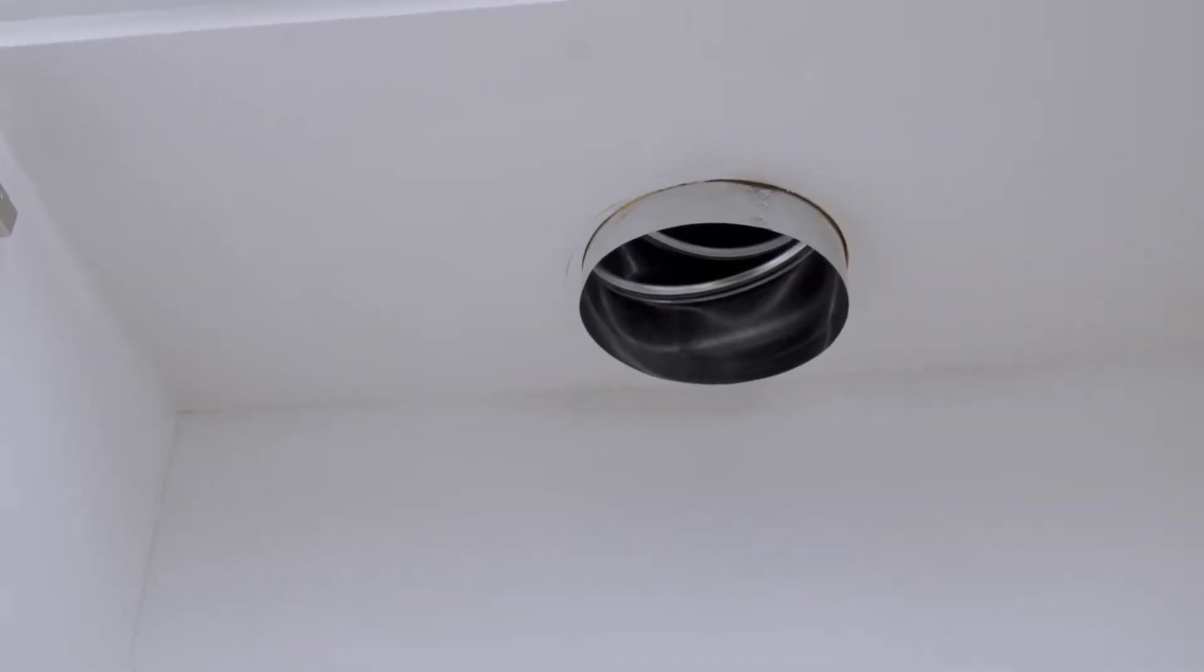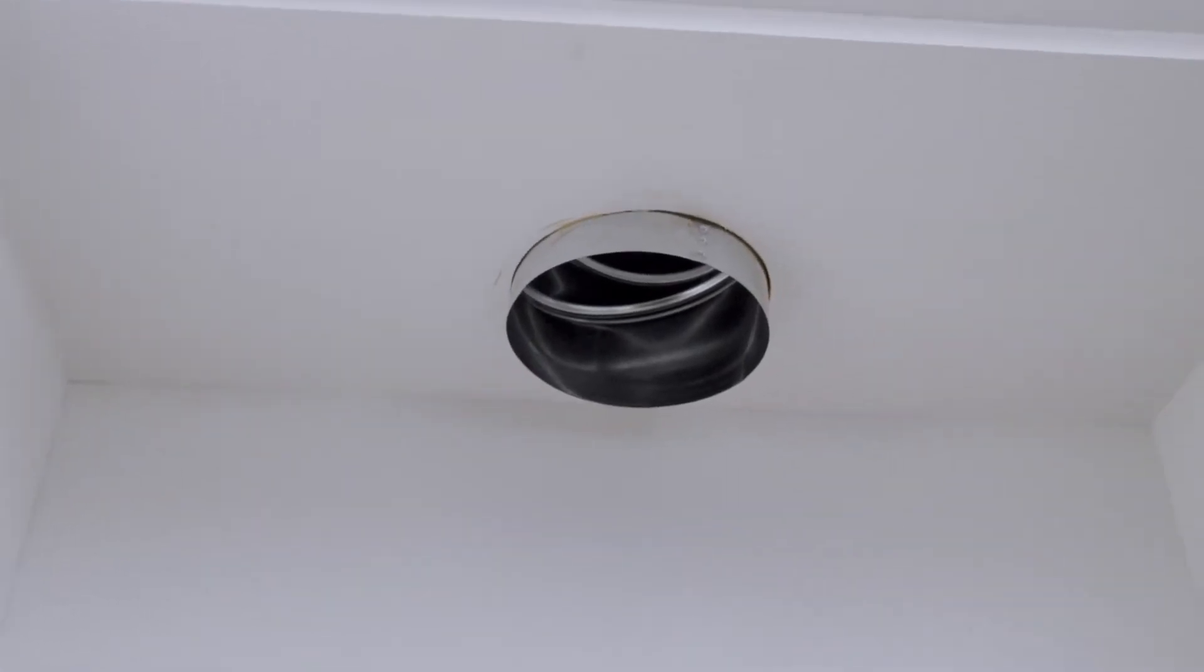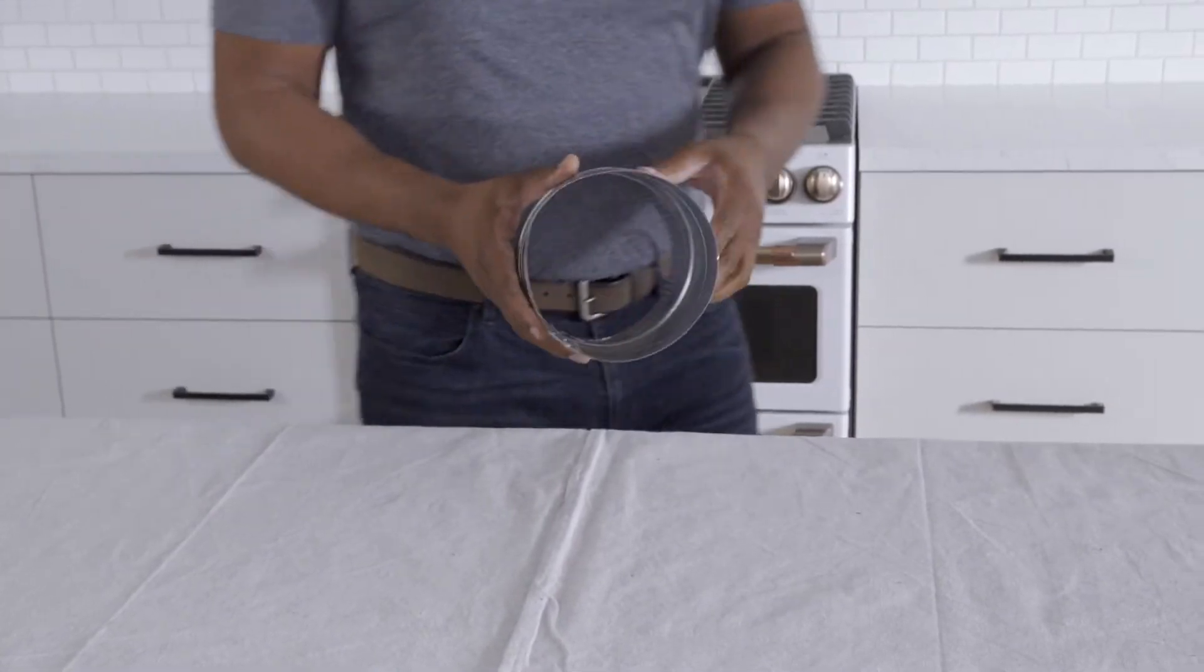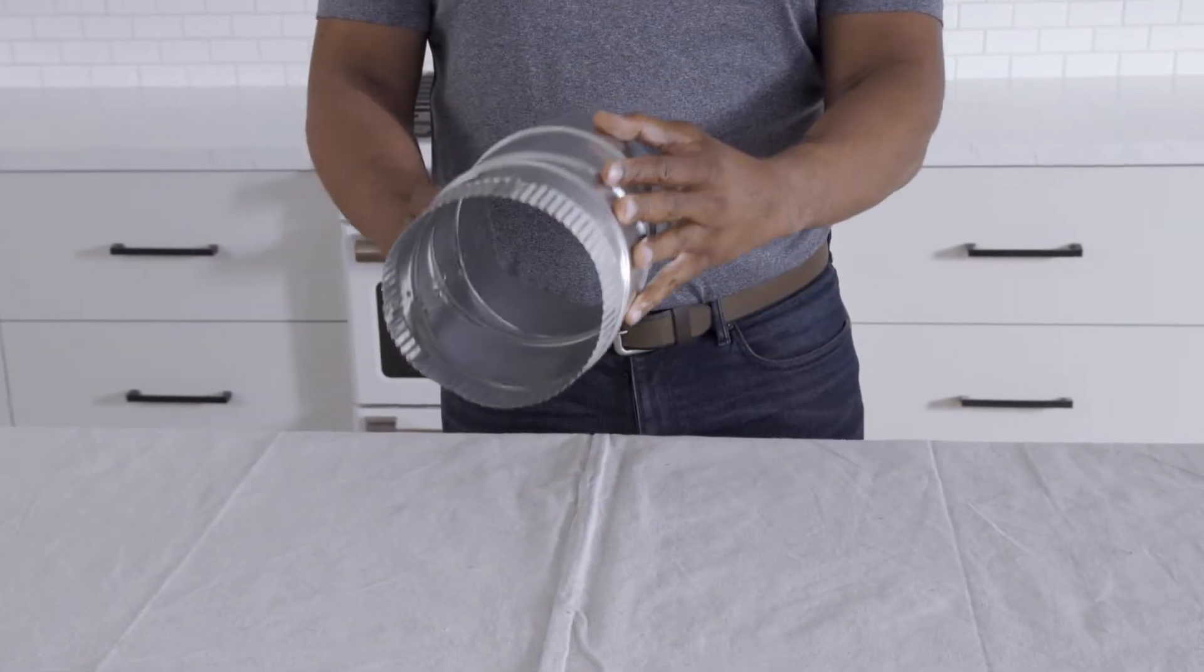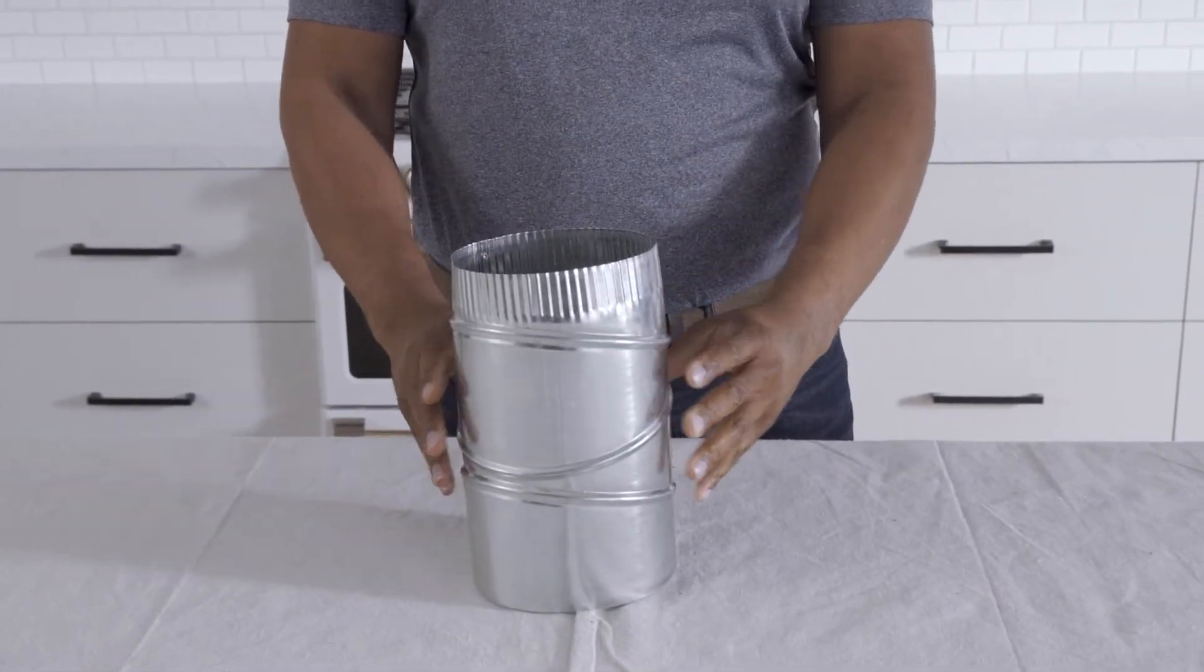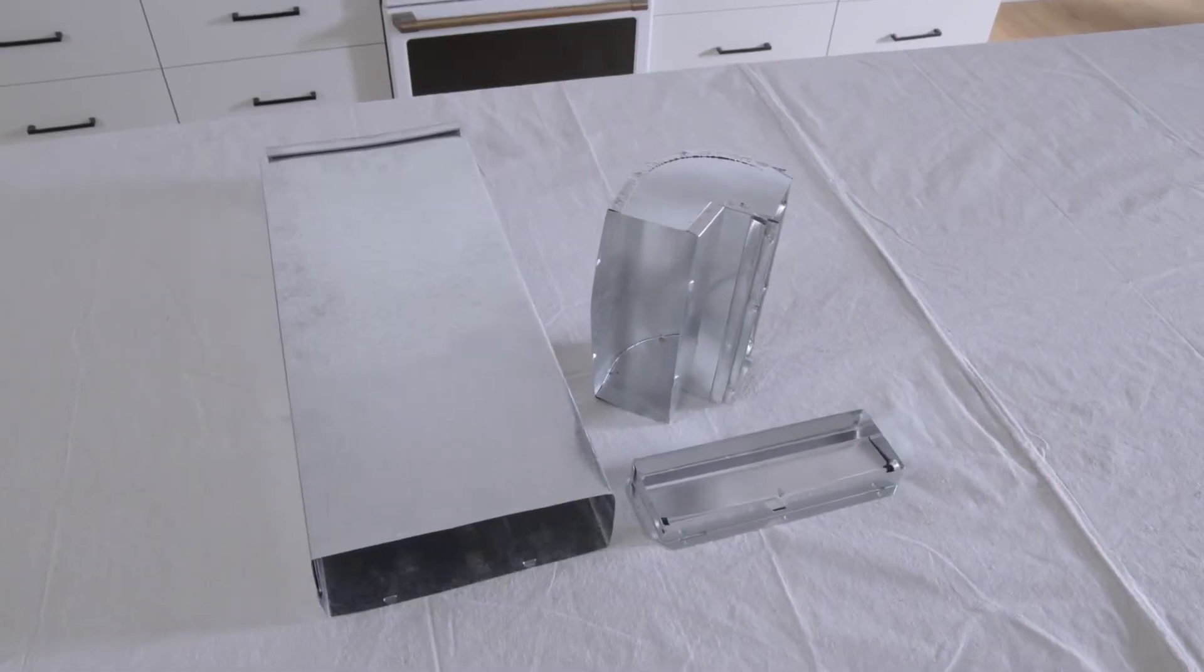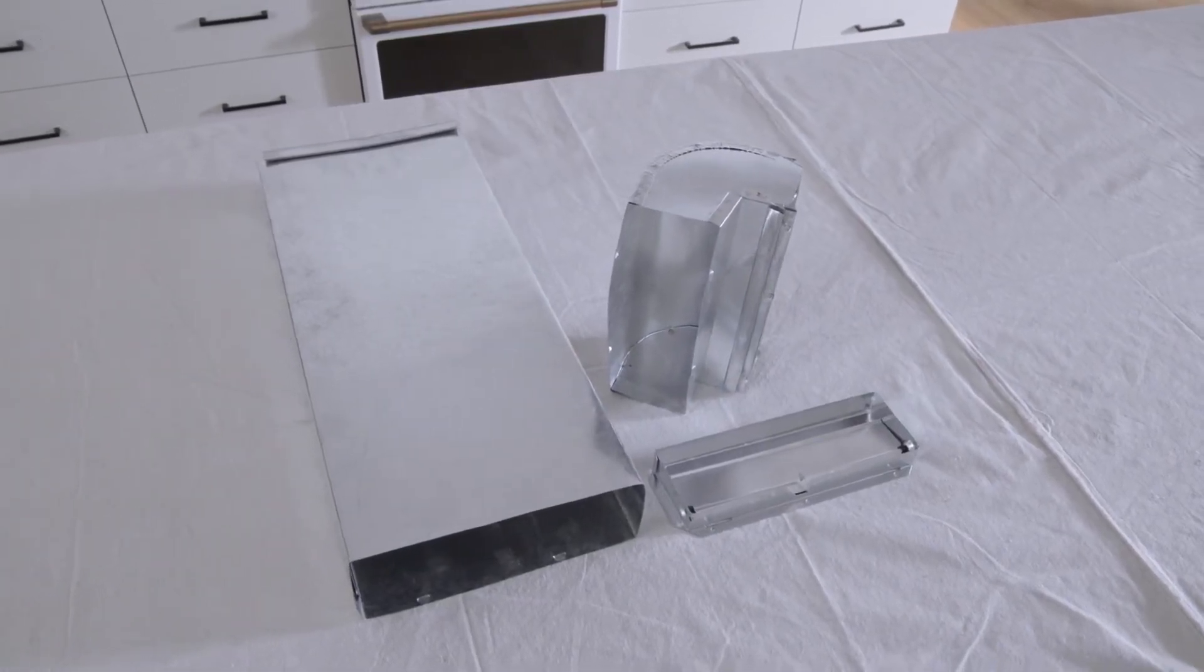First, check or install the ductwork as necessary. For vertical exhaust, round or rectangular options will work. With horizontal exhaust, use only rectangular ducting.